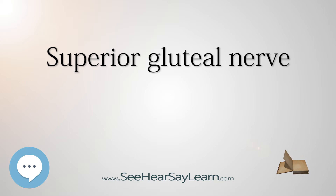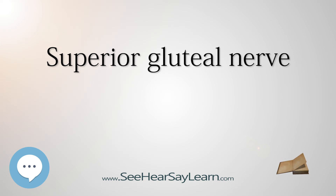In a positive Trendelenburg sign, the pelvis sags toward the normal unsupported side — the swing leg. The opposite, when the pelvis is elevated on the swing side, is known as Duchenne limp. Bilateral loss of the small gluteal muscles results in a waddling gait.